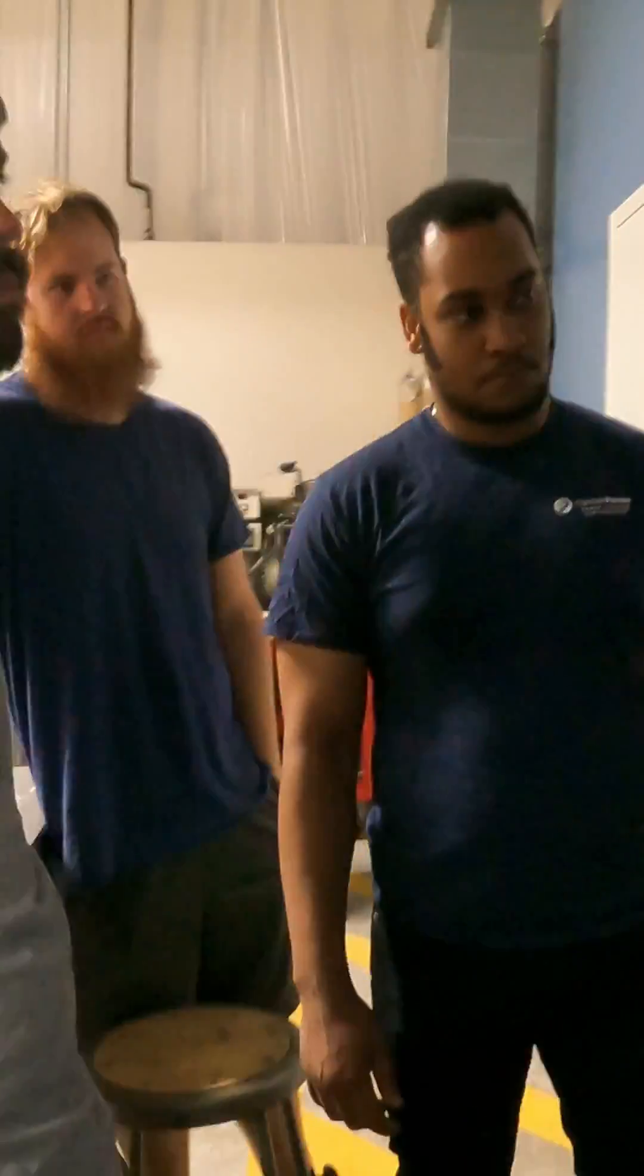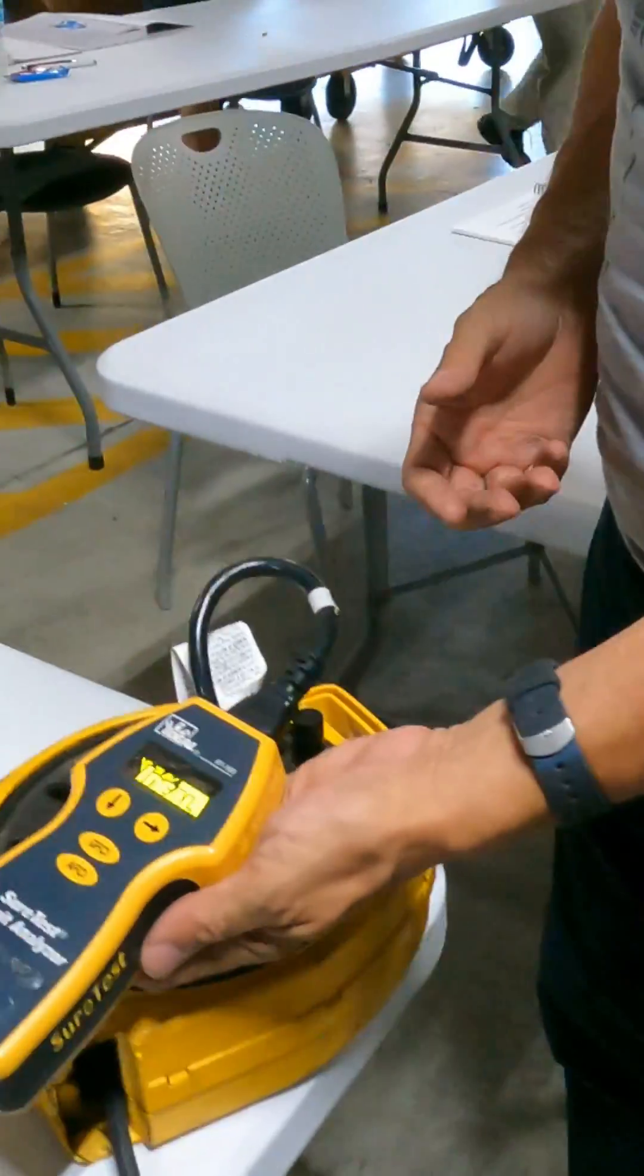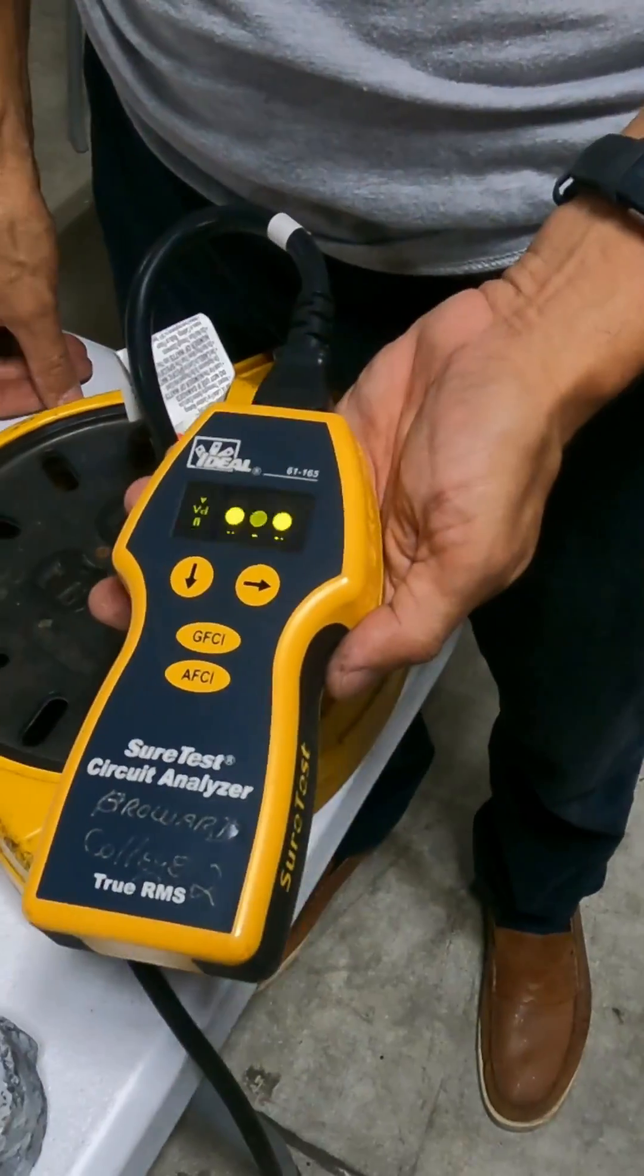Okay, we are going to test another outlet too far away, using an extension cord. Look at the SureTest here. The SureTest says no ground - Mickey Mouse extension cord.